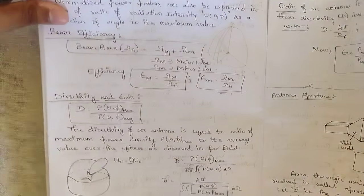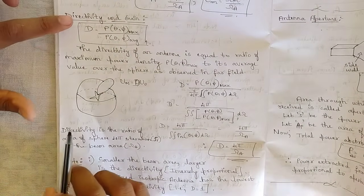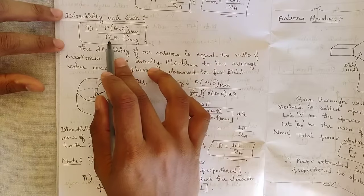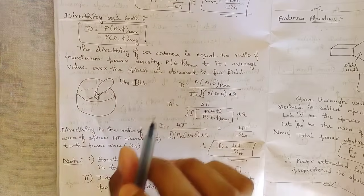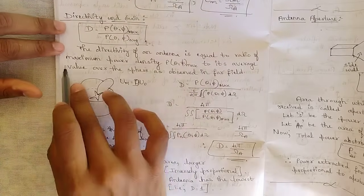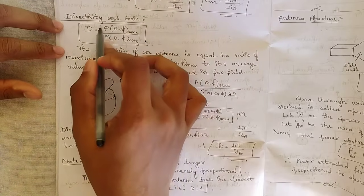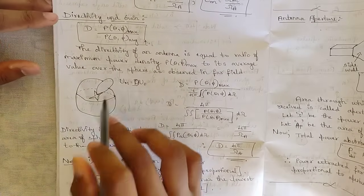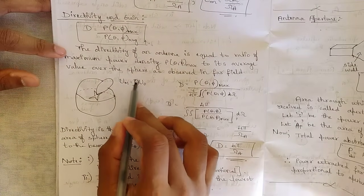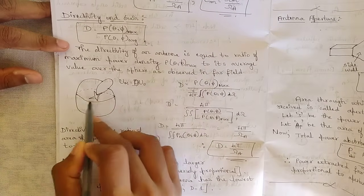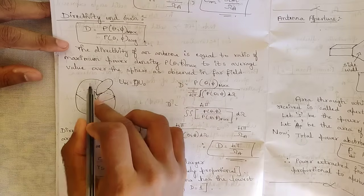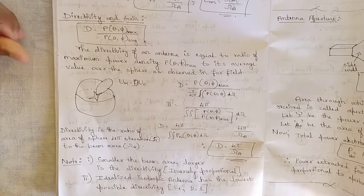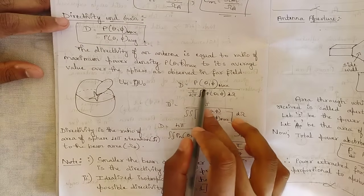Now let's get to directivity and gain. Directivity is measured as a function of P(theta, phi)_max divided by the average power P(theta, phi). The directivity of an antenna is the ratio of maximum power density to its average value over the sphere as observed in the far field. Based on the area in which power is concentrated, the pattern is drawn, and from that pattern the directivity is calculated.